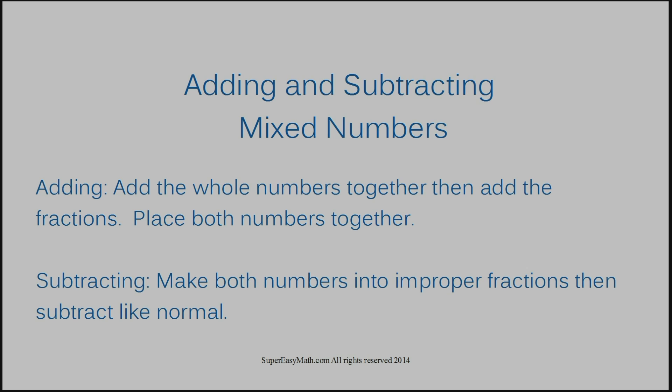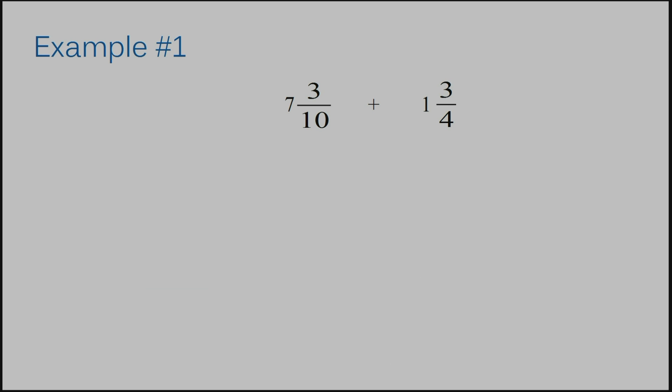Let's jump into example number 1. I have 7 and 3 tenths plus 1 and 3 fourths. I'm going to add my whole numbers like I mentioned before. I have 7 over here and a 1 over here, that's going to give me an 8. Now I'm going to write my fractions directly below. So now, 3 tenths plus 3 fourths is really just what we're working with. We don't need to consider the whole number anymore until the very end. I'm not going to go into a whole bunch of detail of how to add fractions because I have a whole video dedicated just to that, so I'm going to move a little quicker here assuming that you already know how to do it.